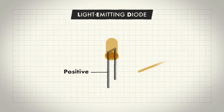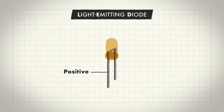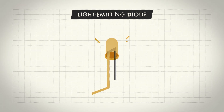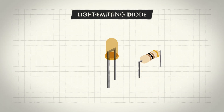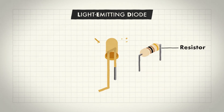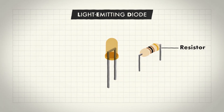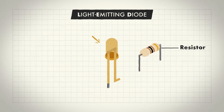From there, it can run through other components first, but must always return to a GND or ground pin on your device, or it won't light up. We also add a resistor to the circuit to limit the amount of electricity flowing through the LED, which prevents it burning out.